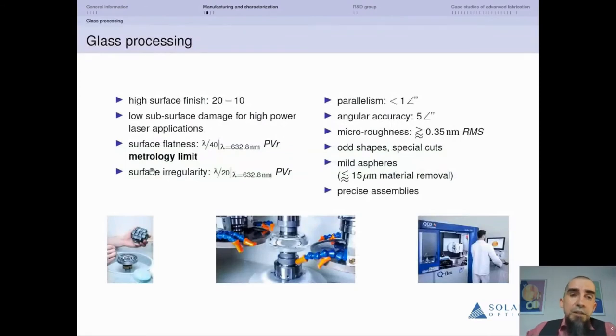Our manufacturing capabilities allow us to fabricate optical elements with 2010 surface finish. Since we have classical pitch polishing as well as MRF technology, we can achieve surface flatness down to lambda over 40, which is our metrology limit. Surface irregularities can be achieved in the order of lambda over 20. Angular accuracy is 5 arc seconds, parallelism is 1 arc second. Surface roughness starts from 0.35 nanometers. We fabricate optics from 4 millimeters up to 300 millimeters.